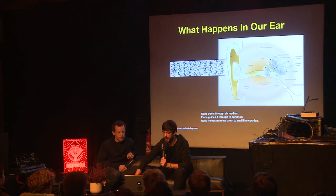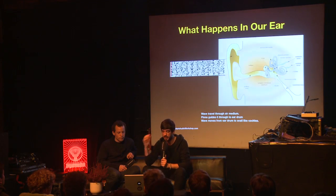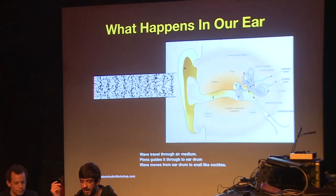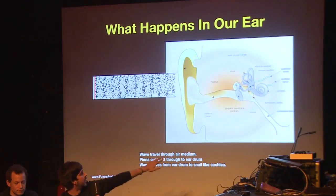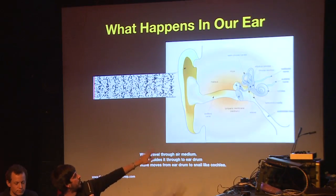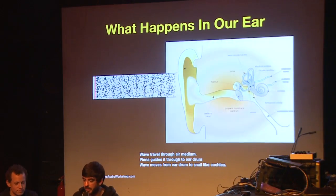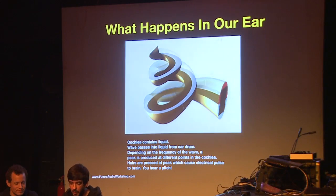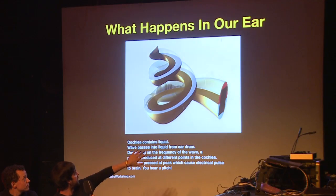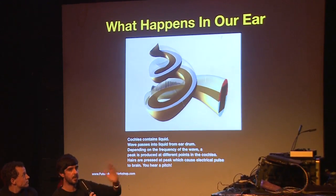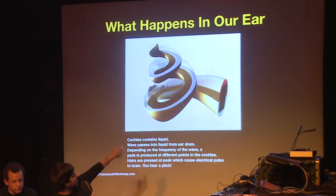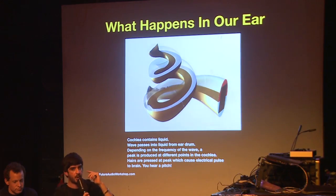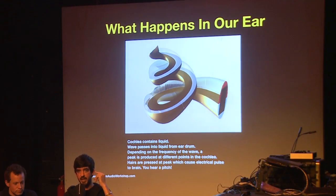The wave travels through a medium. The pinna, which is the outside part of your ear, guides the tone into your ear. It passes through the auditory canal, then hits what's known as your eardrum. It travels into this snail-like shape called the cochlea. I'm going to explain exactly what happens inside there, because that's kind of where the magic happens. The wave comes in and pushes the liquid. It's almost like the opposite of the speaker — when the speaker paper goes forward, the eardrum goes forward also, making a wave that travels up through the snail-like shape and creates a standing wave at different points.